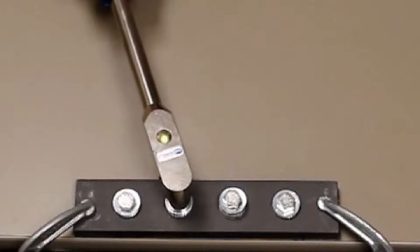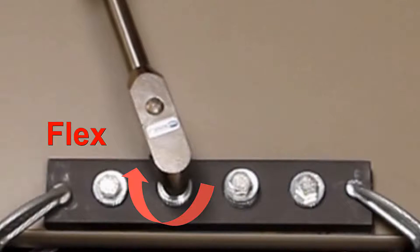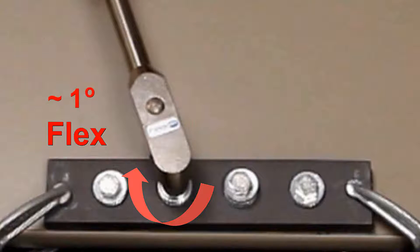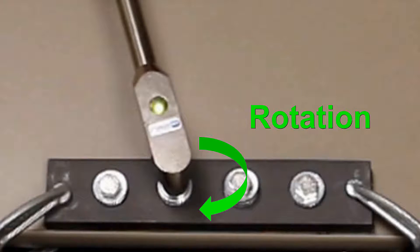Let's take a look at that again. As pressure is initially applied to the wrench there is about one degree of flex before this fastener starts to turn. Note that the LED on the wrench lights as fastener rotation begins.